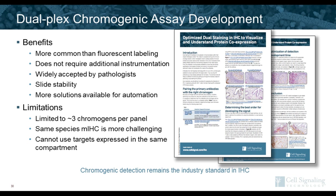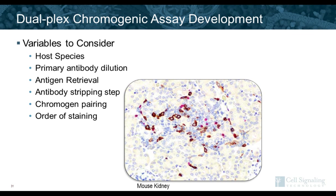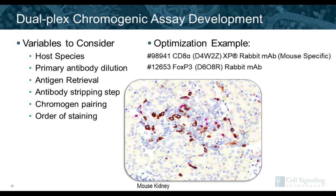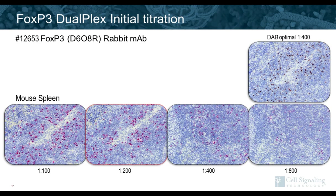Variables to consider in the dualplex chromogenic assay include: host species of the antibodies — if using two antibodies from the same species, a stripping step must be performed between each protocol. Primary antibody dilution and antigen retrieval, stripping step optimization, pairing of chromogens with each primary antibody, and order of staining — meaning which chromogen is deposited first versus second. For this example, we're using CD8 and FOXP3 mouse-reactive clones, both rabbit monoclonal antibodies, so the stripping step between protocols is required.